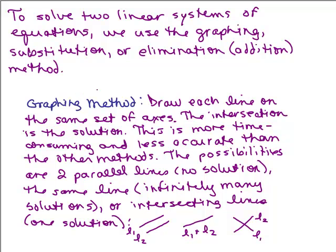The first method was the graphing method. If they're linear equations, we're talking about two lines. We draw each line on the same set of axes and look for their intersection. This takes longer usually because sometimes it's not so easy to graph the lines and it's hard to tell exactly where they intersect. The possibilities are two parallel lines with no intersection and no solution.